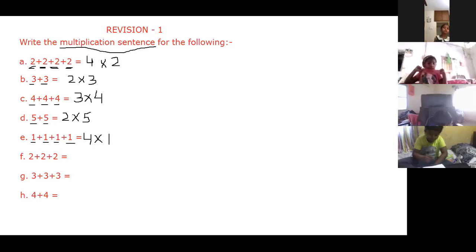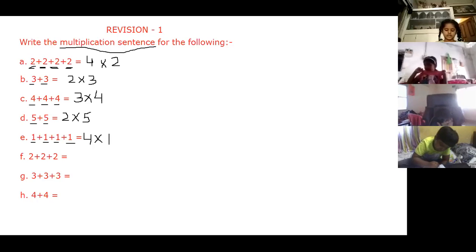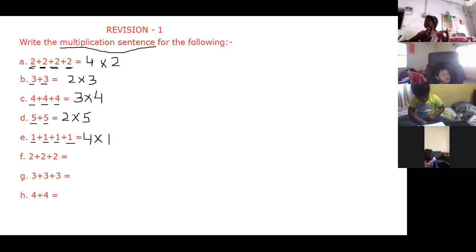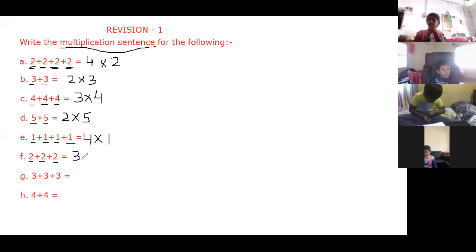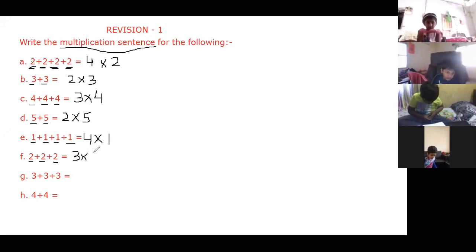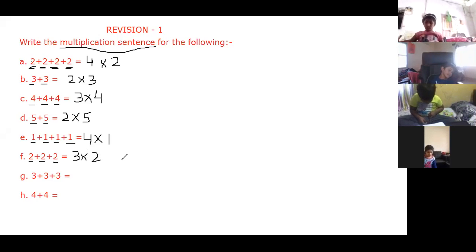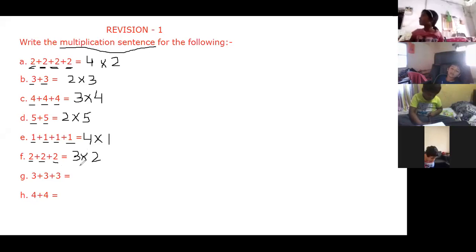Druti, in sixth bit — bit F — how many times are we repeating any number? Three times. Very good. In sixth bit, we are repeating — one, two, and three. So we will write here three. Then we will put the multiplication symbol. Druti, which number is being repeated here? Two. Yes, here we are repeating number two. So after the multiplication symbol we will write two. How will you read this, Druti? Three multiplied by two. Very good.